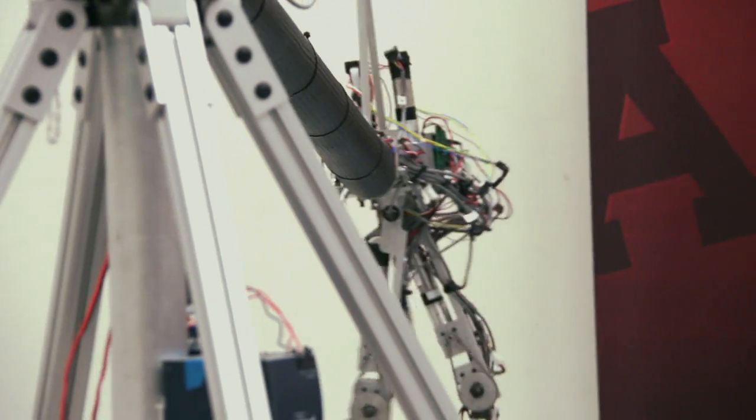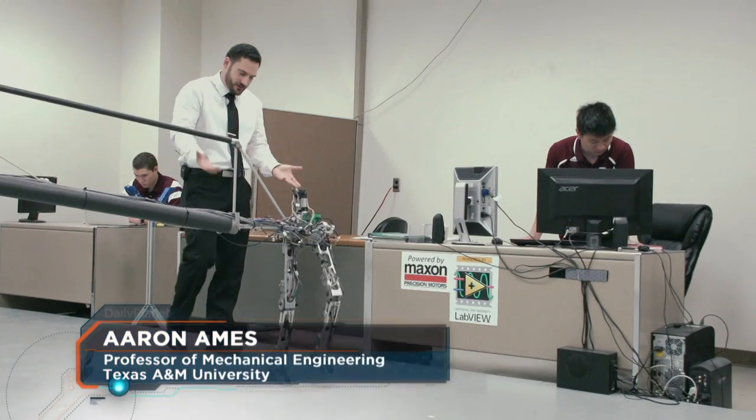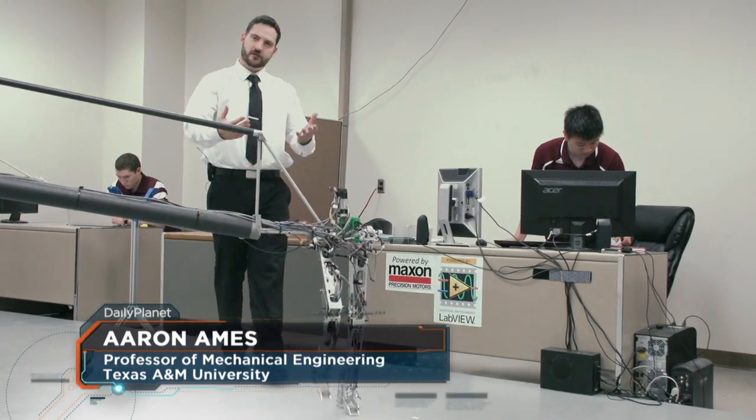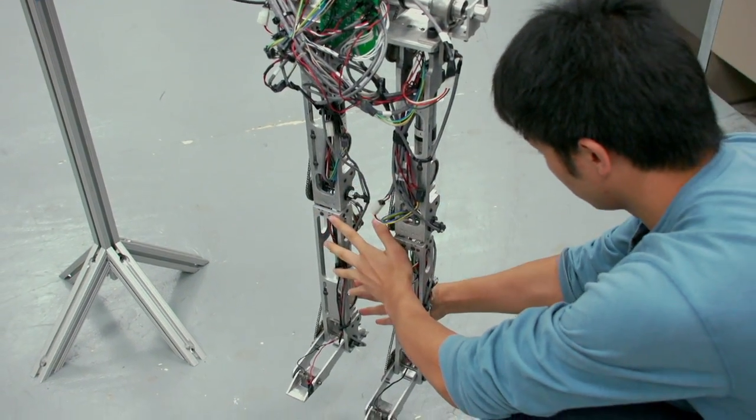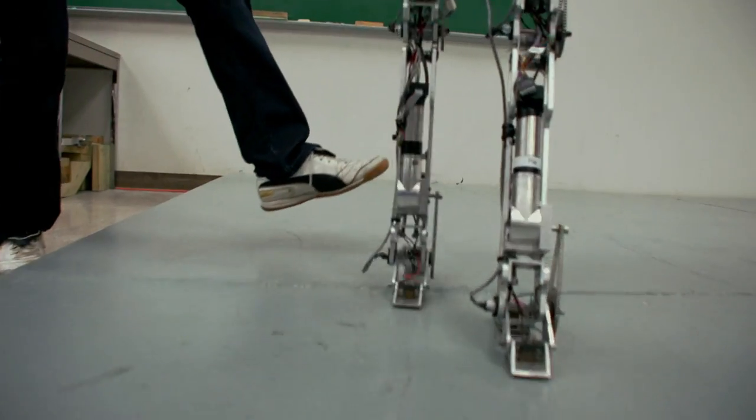We can build exoskeletons to get people out of wheelchairs. We can build prosthesis. We can build orthotics. Today, Amber 2 is going to try something brand new. Taking on obstacles.